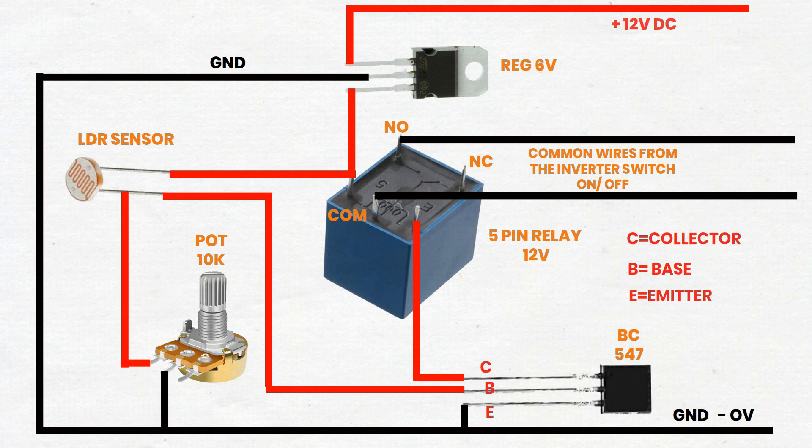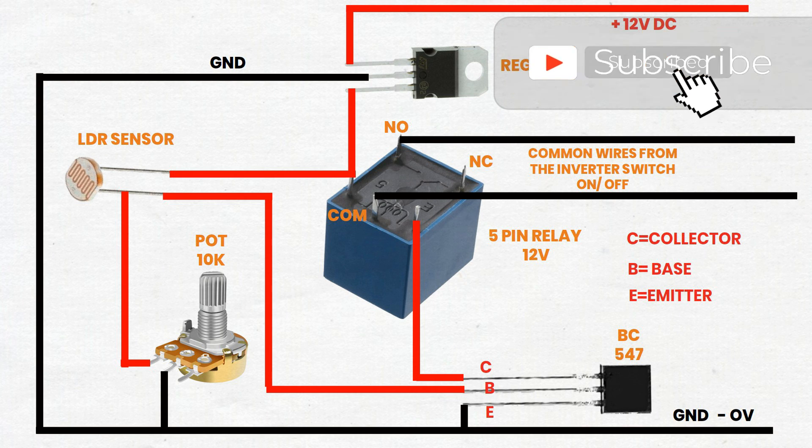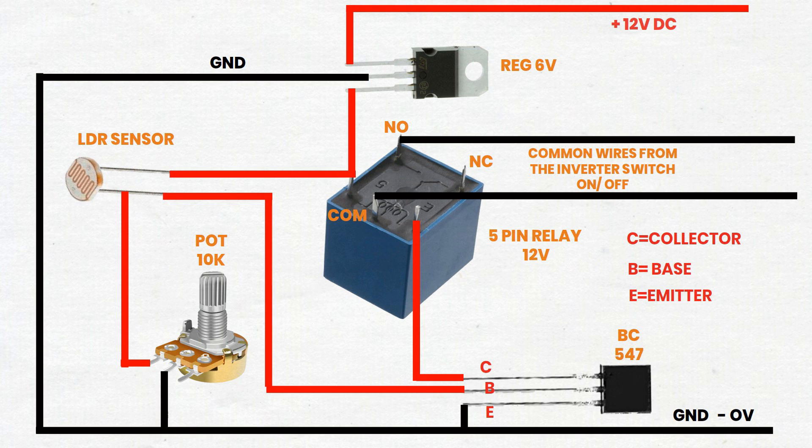Adjust the potentiometer: Set the threshold at which the relay activates based on the light level detected by the LDR. Observe the behavior: The relay should switch the load on and off based on the light intensity. Adjust the potentiometer as needed to achieve the desired sensitivity.